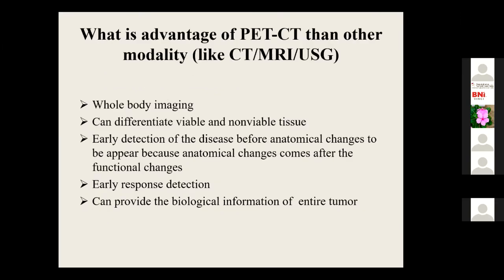Why do we require PET-CT imaging? Because it provides whole-body imaging, whereas CT or MRI are regional imaging modalities. On the basis of PET-CT imaging we can differentiate viable and non-viable tissue, detect early functional changes, detect early disease, and assess early treatment response.